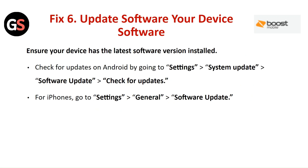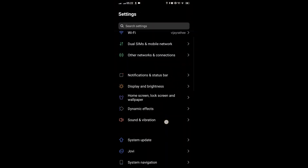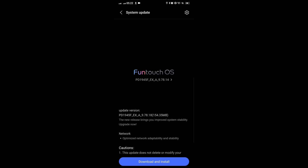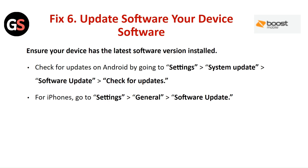Fix Six: Update software. Ensure your device has the latest software version installed. To check for updates on Android, go to Settings, then System Update, and check for software updates. For iPhone, go to Settings, then General, then Check for Software Update.